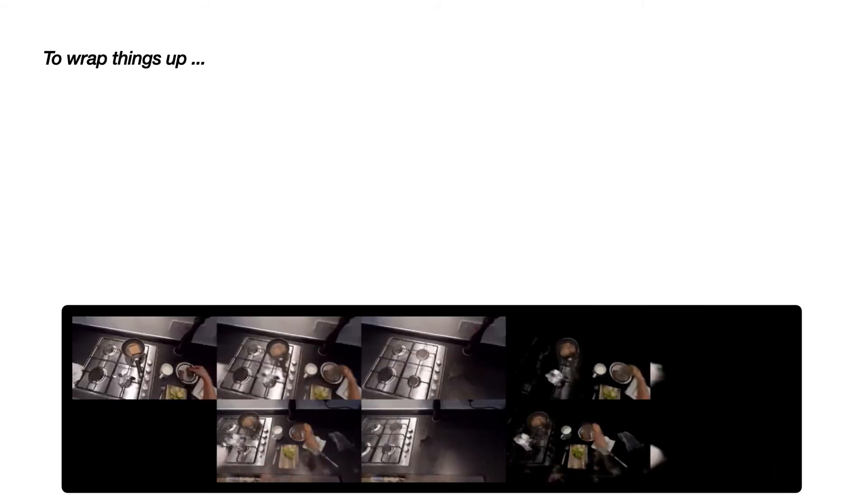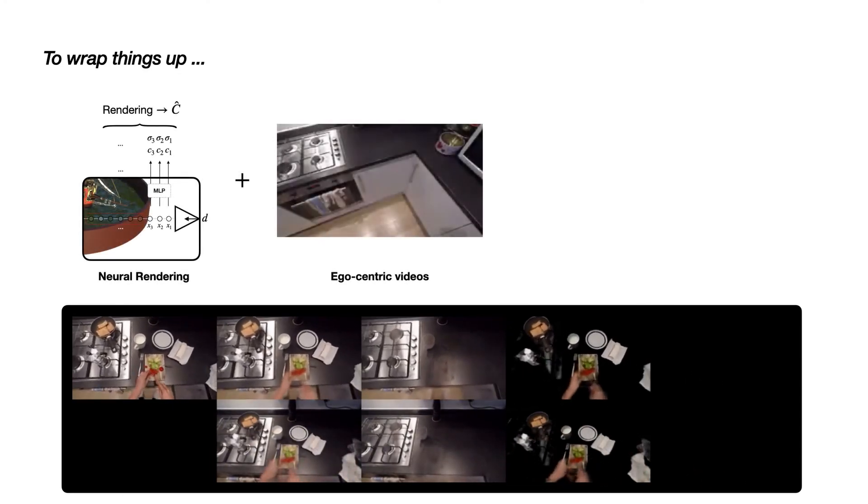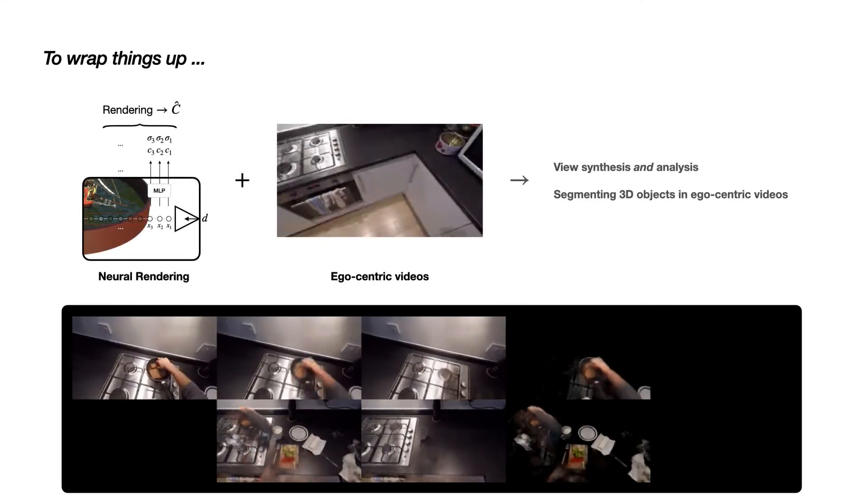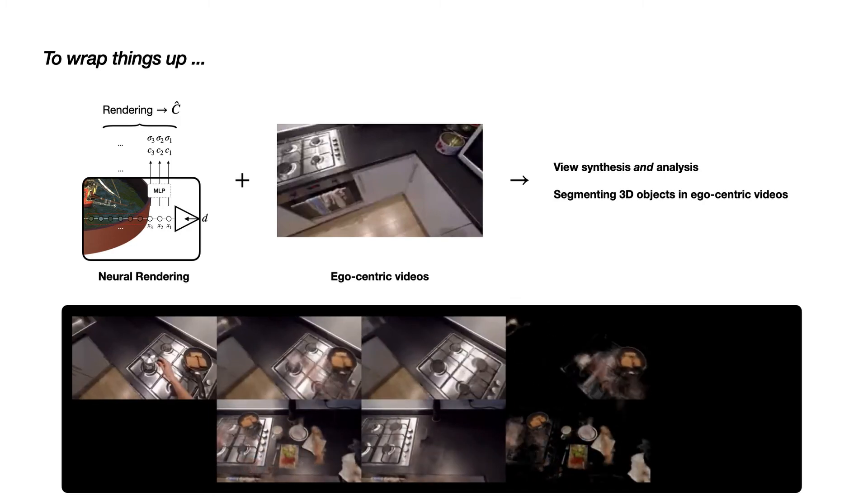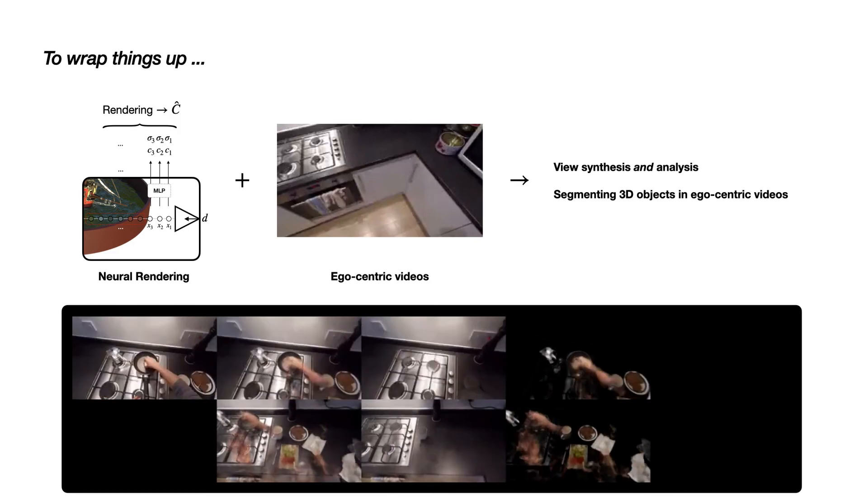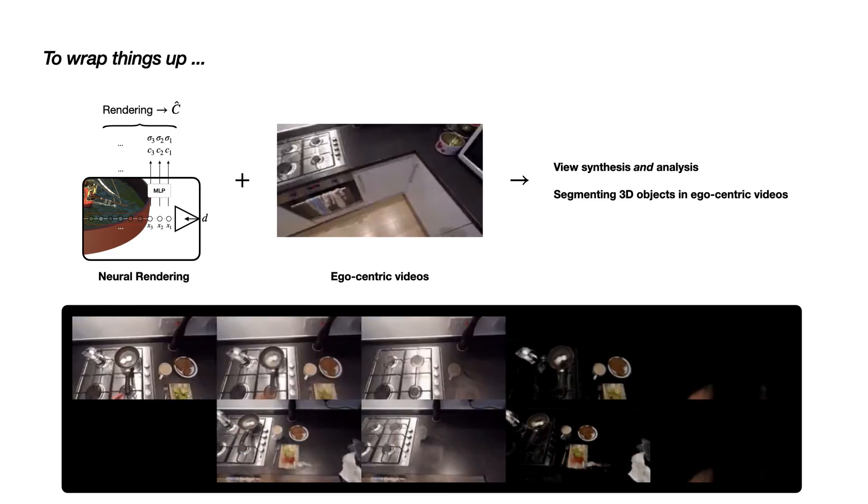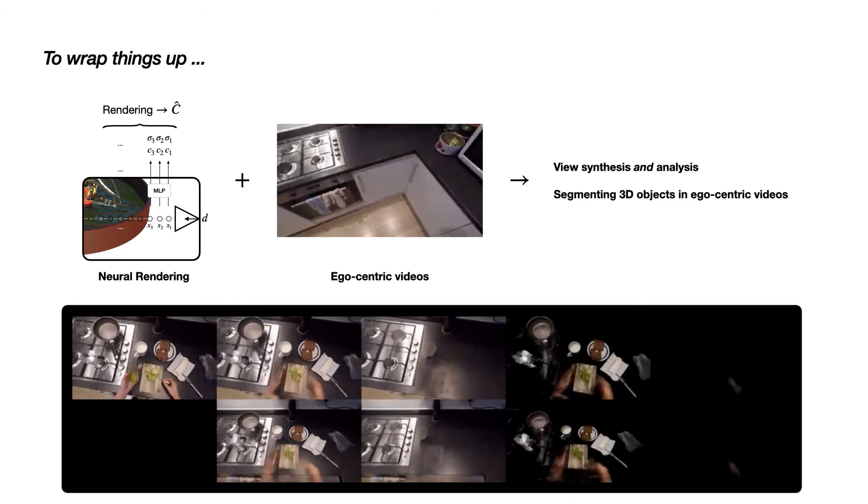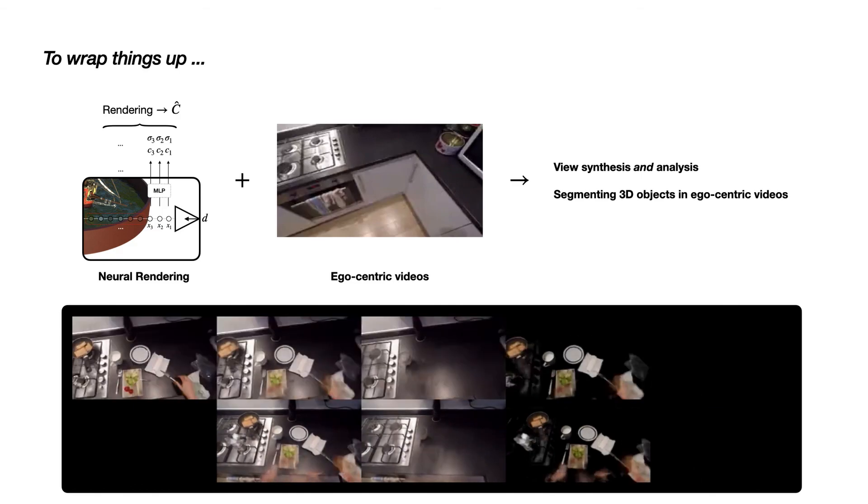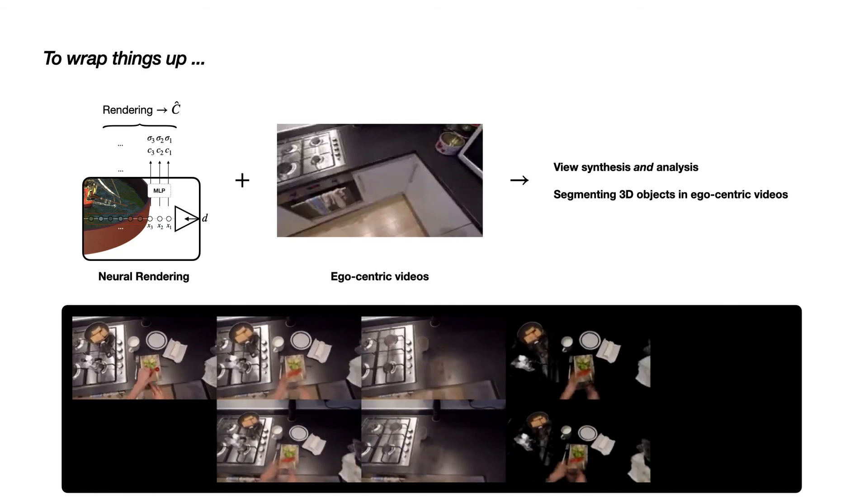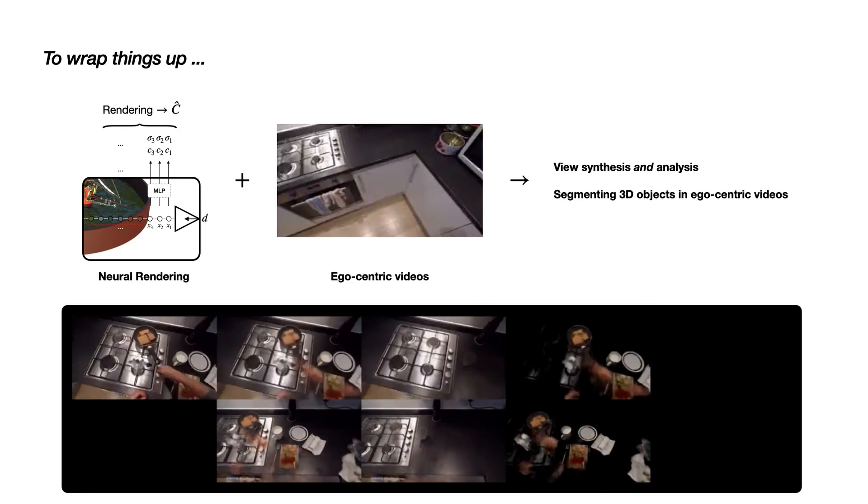To conclude, we have proposed a method that combines neural rendering with egocentric videos. We have seen that the method allows us to remove the background, fix the viewpoint, and visualize the objects that have been moved over the duration of the video. The learned representation makes it easier to reason about 3D objects in the video and enables us to segment them reliably. Furthermore, we have shown that neural rendering can also be used for discovering semantics beside the task of novel view synthesis.